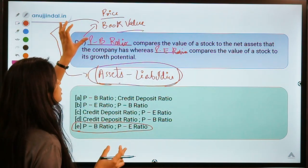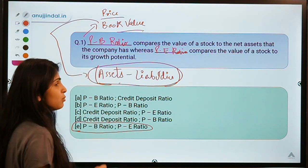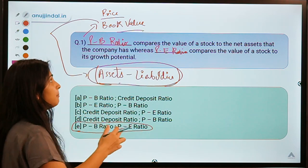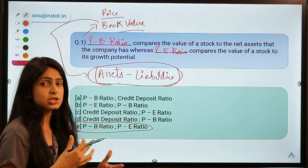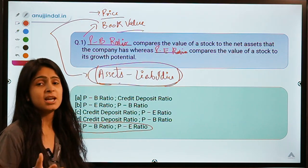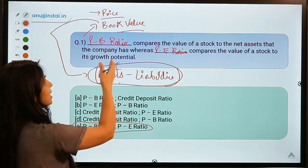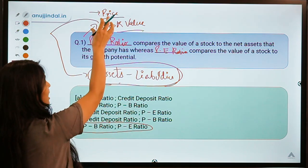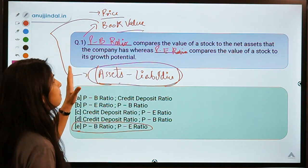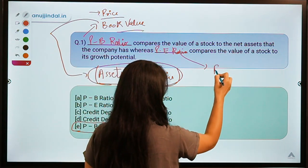The PB ratio compares the market price of a share to the book value recorded in the company's accounts. If this ratio is very high, that particular stock may be overvalued, because the company's books do not show as much value as is reflected in the market price. It could mean investors are valuing it too much, though it can also indicate strong fundamentals.